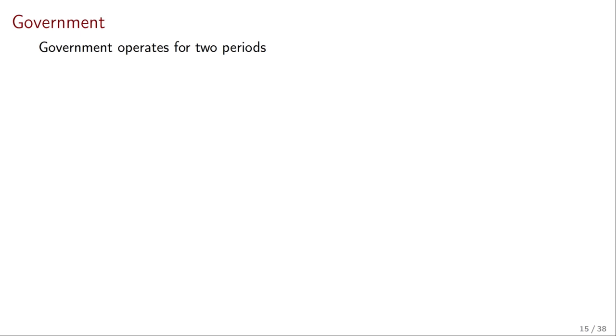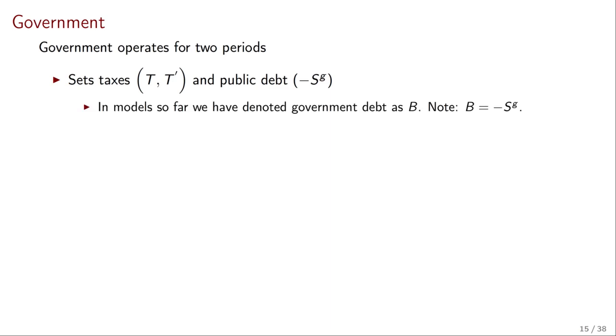What about the government? This government operates for two periods, just like the consumer. It sets taxes, taxes today, taxes tomorrow, and chooses public debt. Now, remember, public debt is nothing but the negative of public savings. So in models, we generally talk about these as B, where B are the bonds of the government. But because we've defined everything for the current account in terms of savings, we are changing here the notation for the public savings. We're denoting it as SG instead of as debt B. But you can see how you can go back and forth because they are just the negative of one another. Now, the government has to set these taxes and this debt so as to pay for government spending G and G prime. And of course, the government takes as given the international interest rate R star.